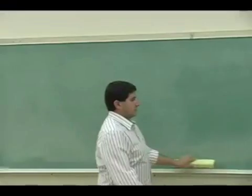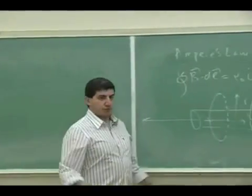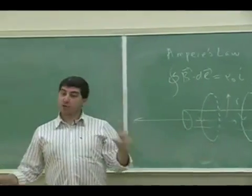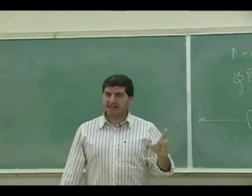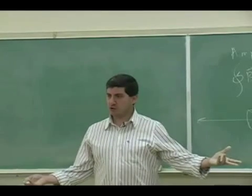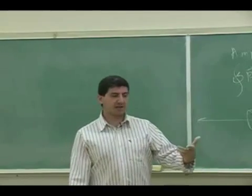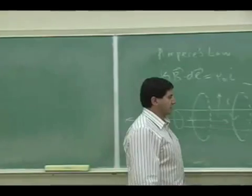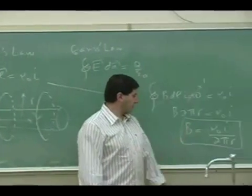So the magnetic field of a pretty long cylindrical wire outside of the wire has that behavior, μ₀I over 2πr. Notice how quick that was to do. So Ampere's law is a quick way of getting the B field for some symmetric situations.